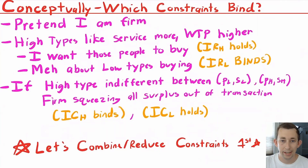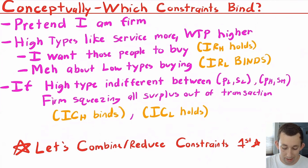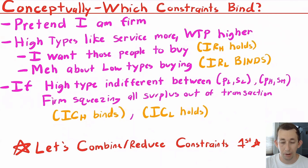Let's pause and think conceptually about what makes sense between a firm and consumer in this situation. The high types like the storage service more, so they have a higher willingness to pay at the same storage level. That means the firm wants the high types to buy because it can charge them a higher price, getting higher profit. So the firm definitely wants high types to buy, meaning the IR constraint for the high type should hold strictly — greater than zero, not just equal to zero.